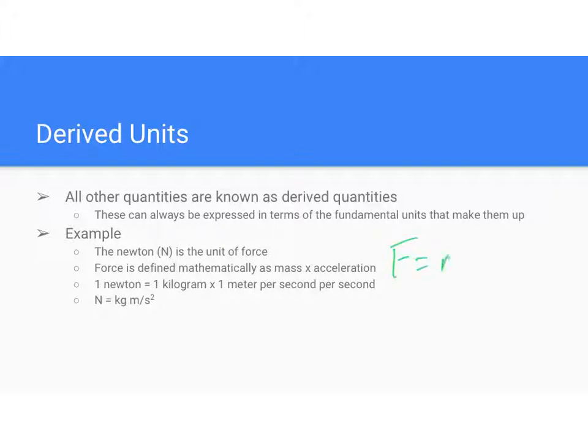We calculate it, we say F equals mass times acceleration. Well, our fundamental units for mass are kilograms. Our fundamental units for acceleration, well actually even acceleration is somewhat derived because it is meters per second squared, but you can see that meters and seconds are both fundamental units. So force is kilograms times meters divided by seconds squared, and so one newton as we see over here is a kilogram times a meter per second squared.